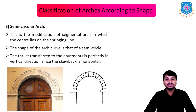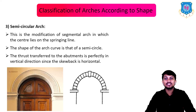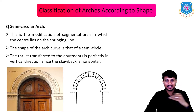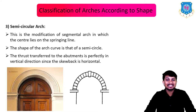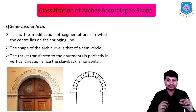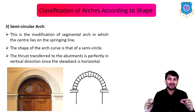Third is semi-circular arch. This is a modification of the segmental arch in which the center lies on the springing line. The shape of the arch curve is semi-circular. The thrust transferred to the abutments is perfectly vertical since the skewback is horizontal.